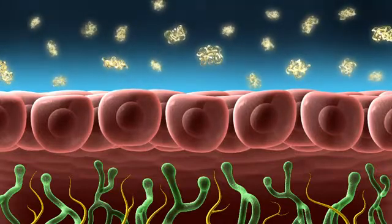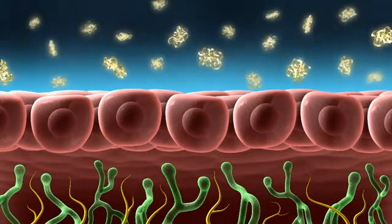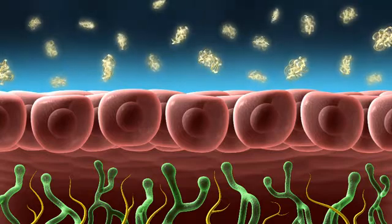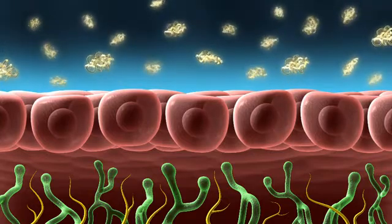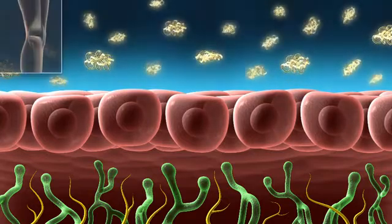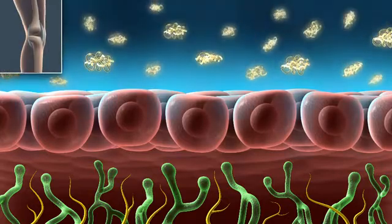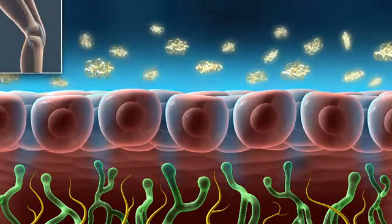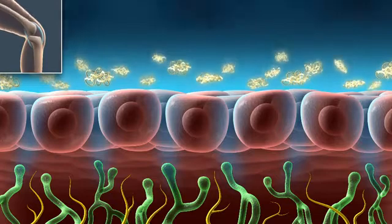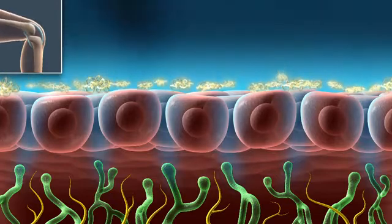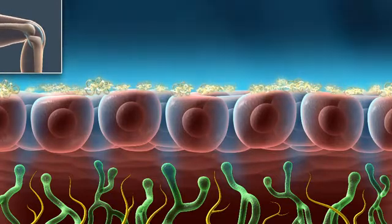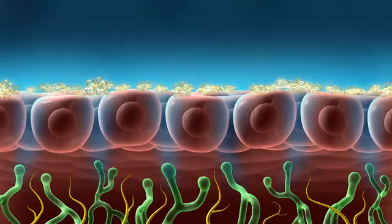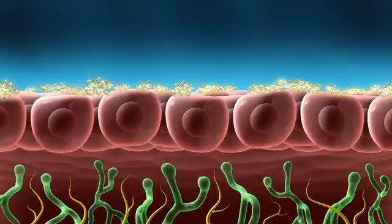In addition, HA helps to regulate the synovial fluid volume within the joint space. During normal joint articulation, HA controls filtration of fluid through the synovial lining by forming a reversible hydrostatic barrier.